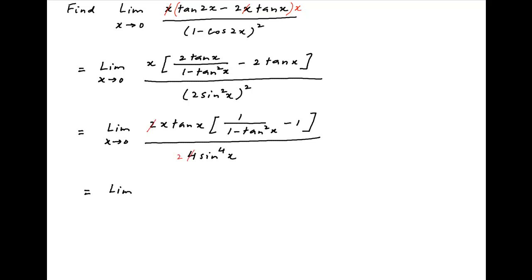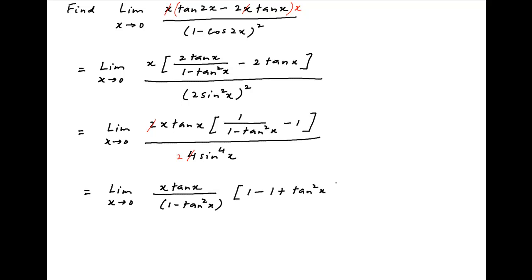This is equal to the limit x tending to 0, x times tan x divided by (1 minus tan²x), multiplied by [1 minus (1 plus tan²x)] and all of this divided by 2 times sin x raised to the power 4.